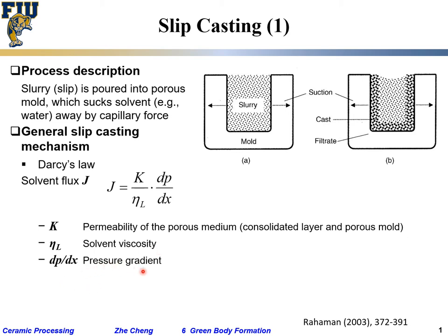The dp/dx term is the pressure gradient between inside and outside. The higher the permeability, the higher the solvent flux. The higher the pressure gradient — how fast the pressure decreases from one side to the other — the higher the solvent removal rate. Higher viscosity (higher eta) means a lower solvent removal rate. Common sense.